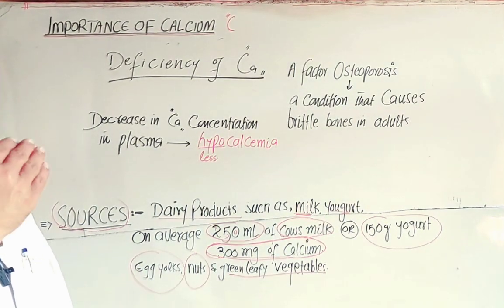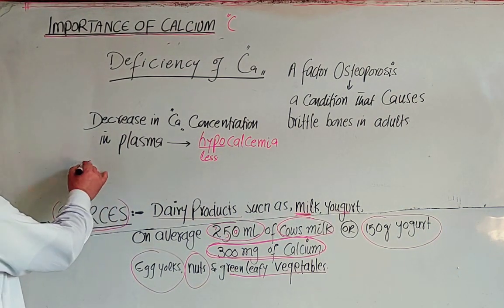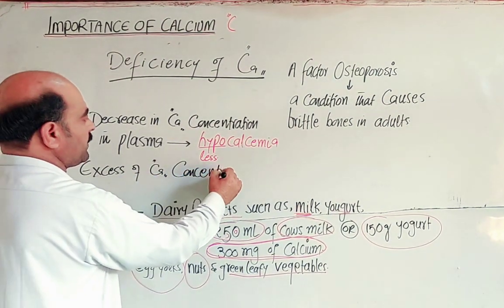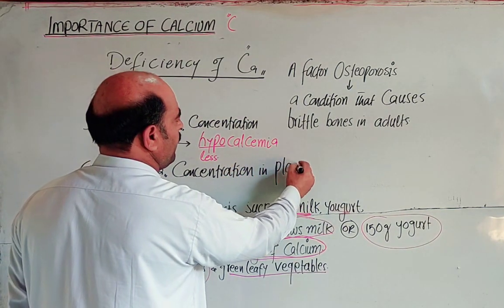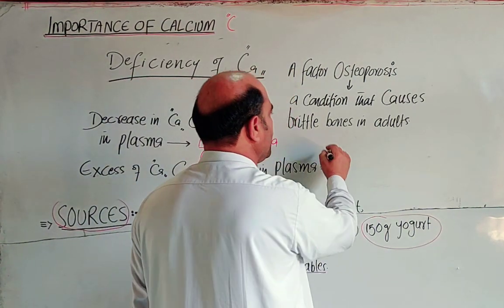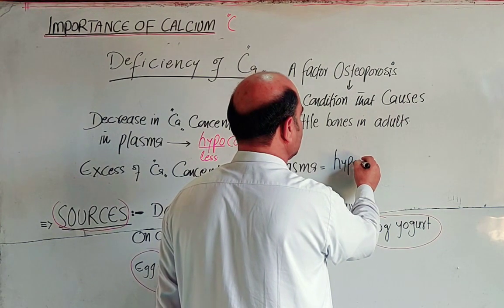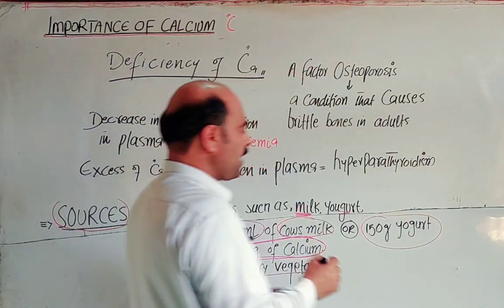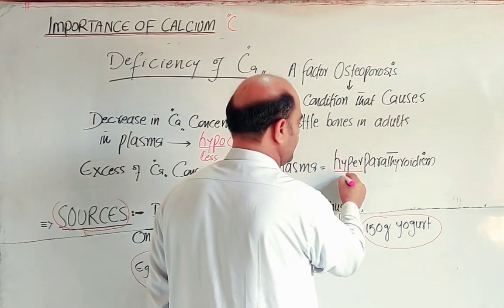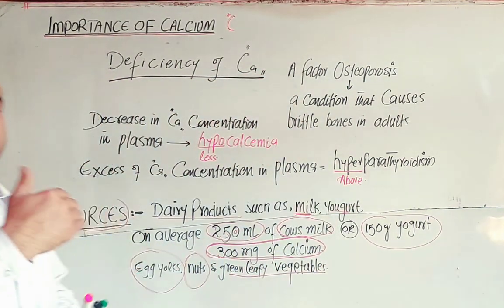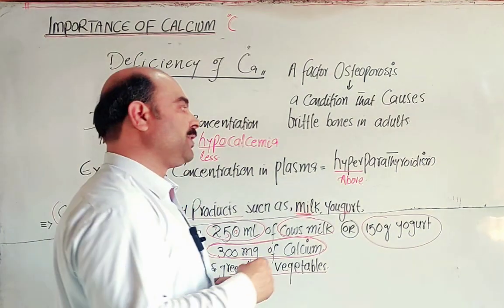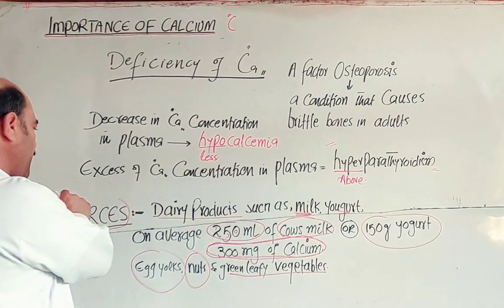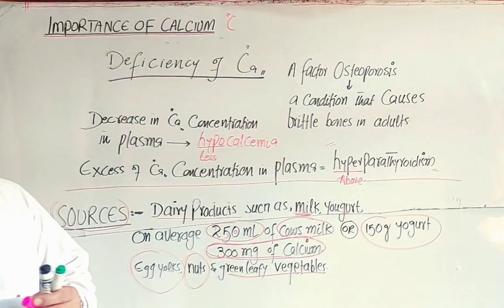In contrast, excess calcium concentration in blood plasma is called hypercalcemia. The condition of excess calcium relates to hyperparathyroidism — 'hyper' meaning above normal — where calcium concentration increases in the blood plasma. So students, these are all the key points about the importance of calcium in the human body. Thanks a lot for watching the video.